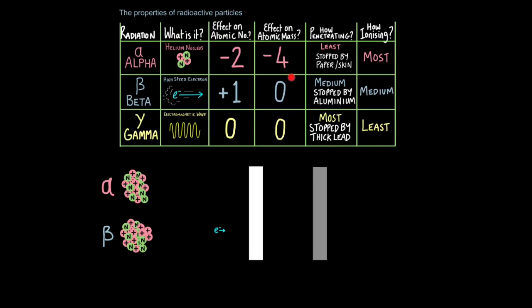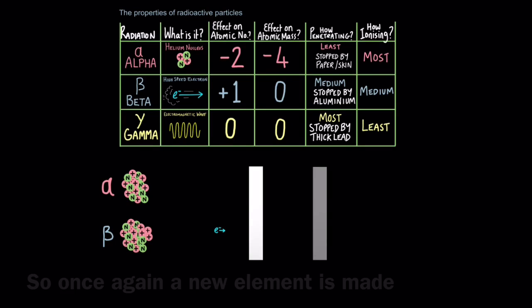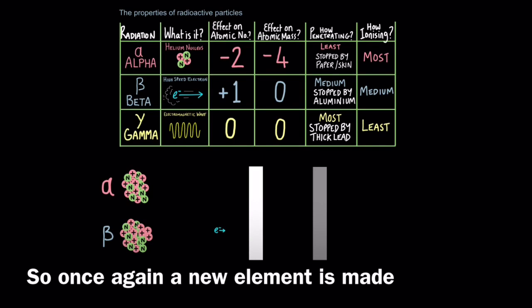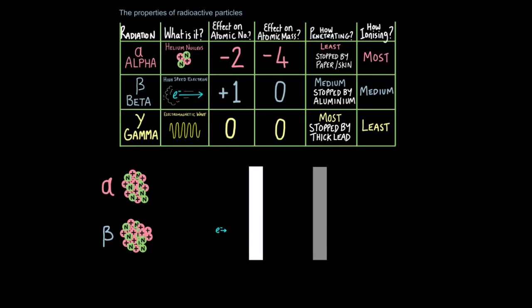But as it's only lost an electron, a virtually massless particle, the overall mass of the isotope doesn't change. The only thing happens is the atomic number increases by one due to this extra proton. Now electrons are much much smaller than alpha particles so they can travel through paper no problem. But aluminium will stop a beta particle.